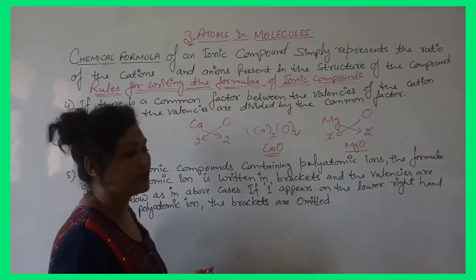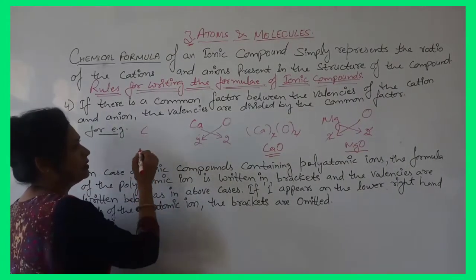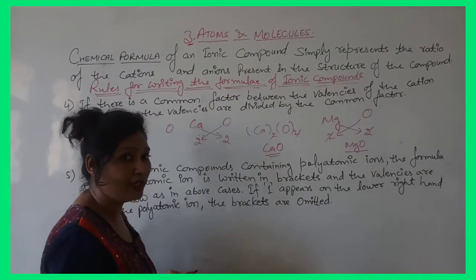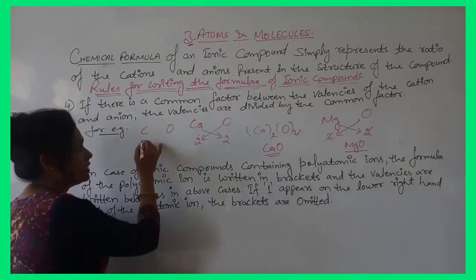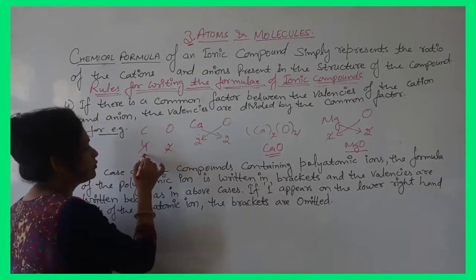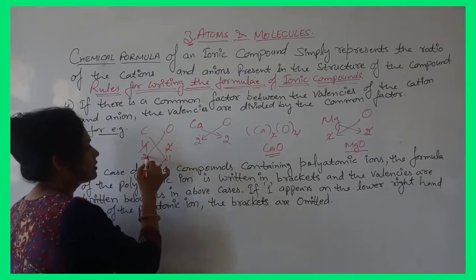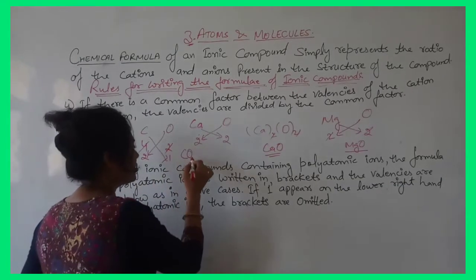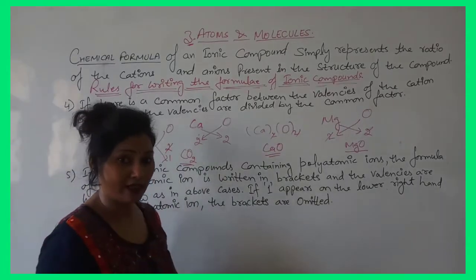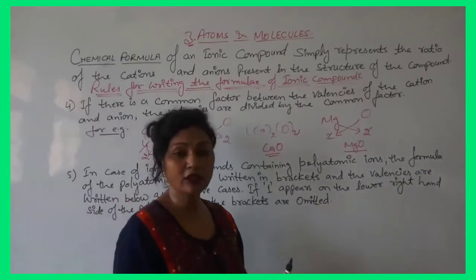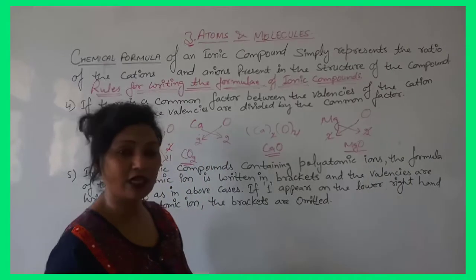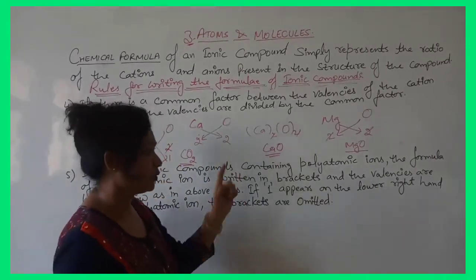We can also take CO₂ as an example — this is a molecular compound. The valency of carbon is 4 and oxygen is 2. Cross-over the valency: we get C with subscript 2 and O with subscript 4, but taking common factor 2, the final formula becomes CO₂.